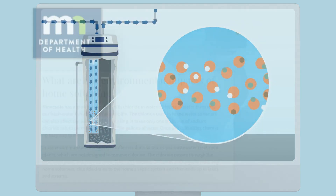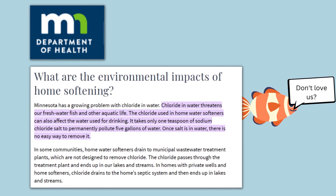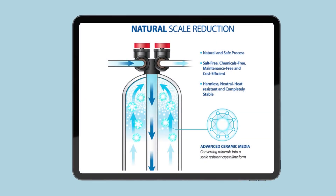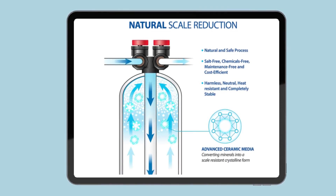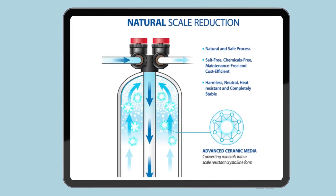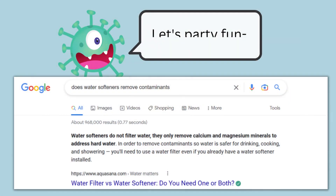Now, water softeners can damage plants and fish, which is why they're banned in California and Arizona. Therefore, we also have water conditioners that alter water hardness to reduce scaling in pipes by using template-assisted crystallization. Here's the catch though — water softeners do not clean water from impurities like iron, chlorine, bacteria, and all that nasty stuff.